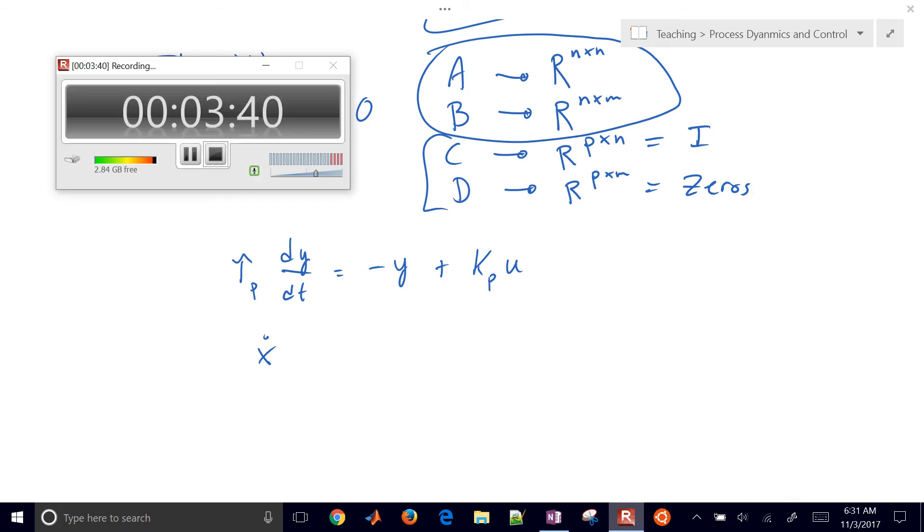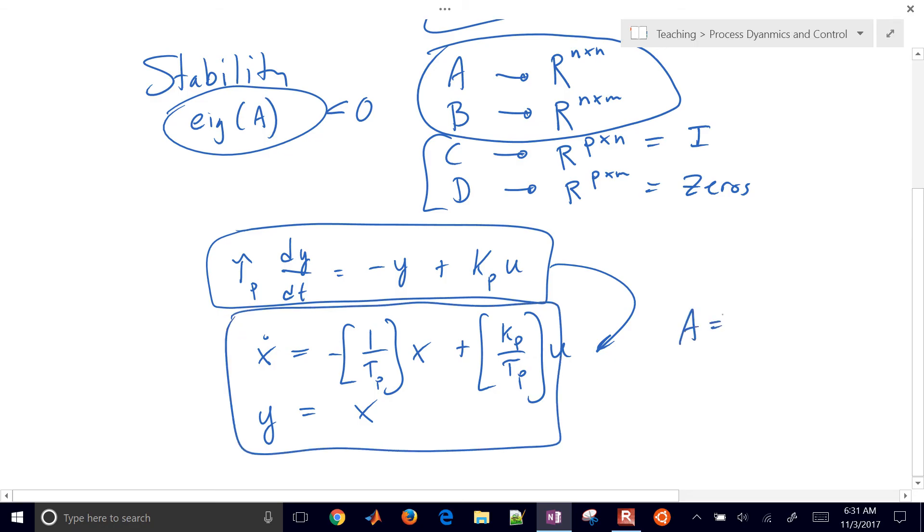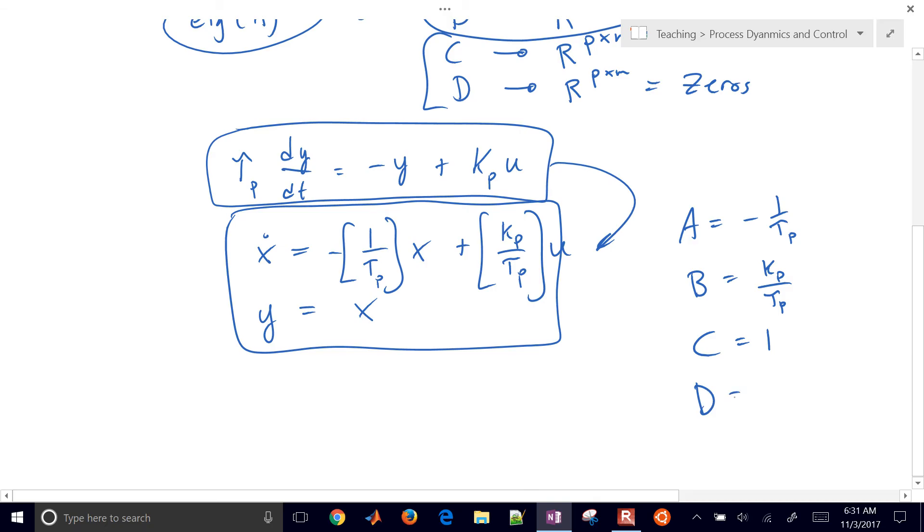And then I'll go ahead and divide through the tau P value, times X plus Kp over tau P times U. And then just create my output, which is Y equals X. So this original equation right here in state space form becomes two equations. And then my A matrix is just going to be one by one, and it's going to be minus one over tau P. My B matrix is going to be Kp over tau P. So here is my state space representation of that system.